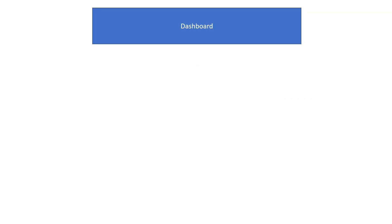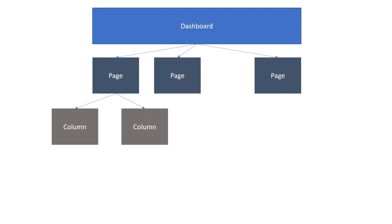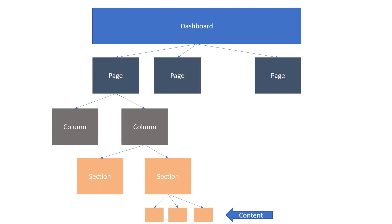Now let's look at the structure of a dashboard. You have the dashboard which comprises of one or more pages. Each page will have one or more columns. Each column can have one or more sections. Each section can have content within it. Content is your OTBI analysis — graphical view, tabular view, action links, action link menus, embedded content, text, folders, and many other things.